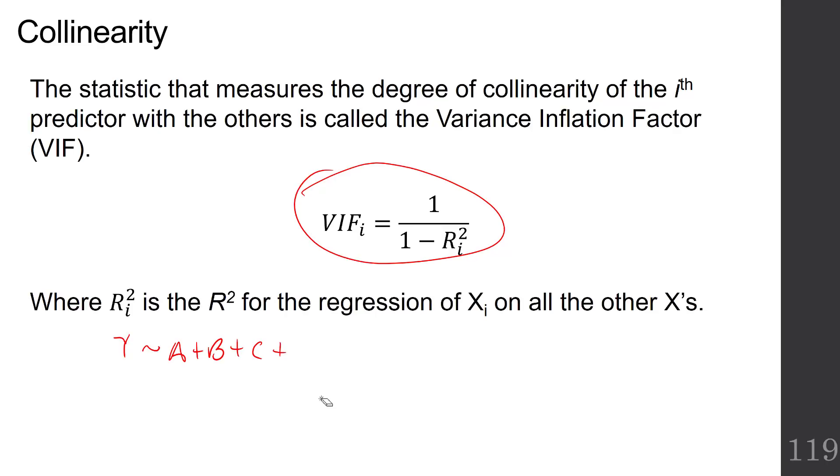So why don't we just report that r squared for each one? Well, this has a nice interpretation. So what if the r squared is 75%, 0.75? Then what would my VIF be? If my r squared was 0.75, my VIF would be 1 over 1 minus 0.75, and that's 1 over 0.25, which is 4. So if your r squared of a single predictor against all the other predictors is 0.75, then your VIF is 4.